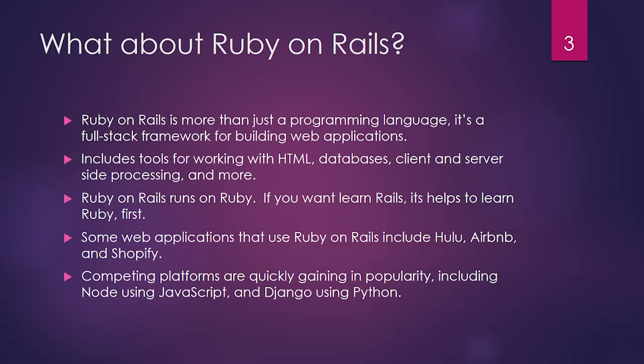Basically, Ruby on Rails had a period of popularity, and it's starting to wane a bit, giving way to Node and Django, which run on JavaScript and Python respectively. Those are gaining popularity because they tend to run a bit faster when you start to scale up.